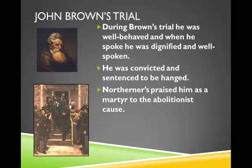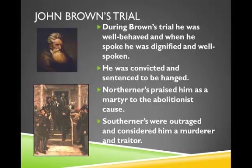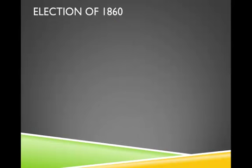Southerners, on the other hand, were outraged and considered him to be a murderer and a traitor. They were very upset that the North was holding him up as a symbol of abolitionism. A year after John Brown's raid, it was time for the election of 1860.